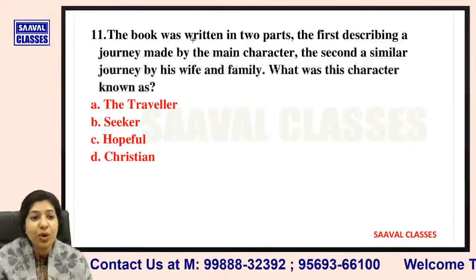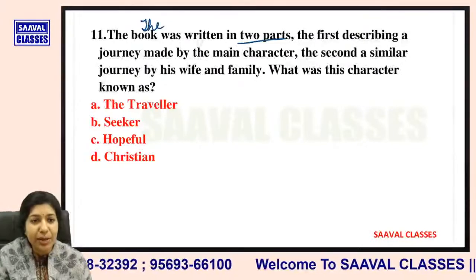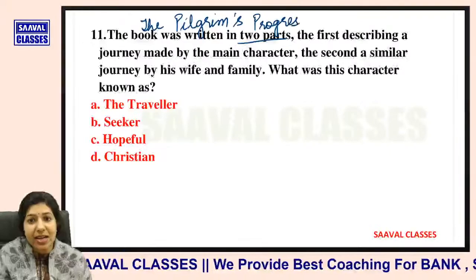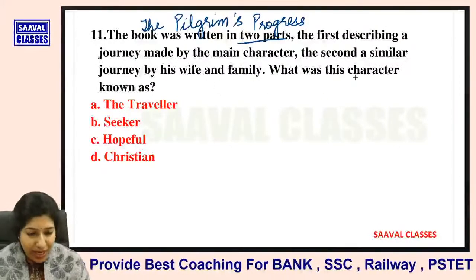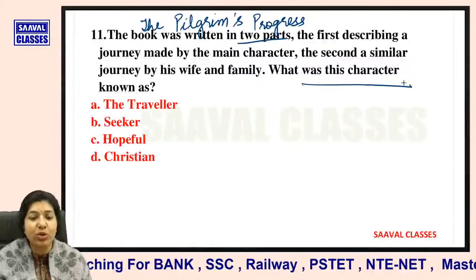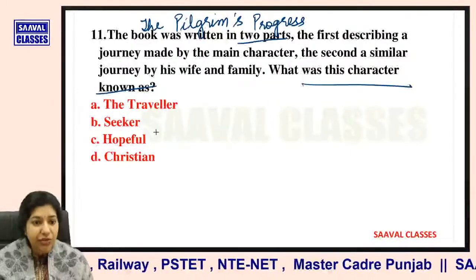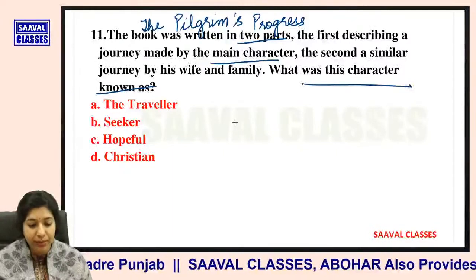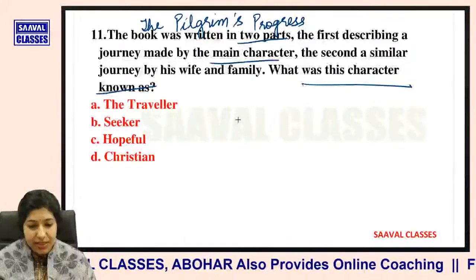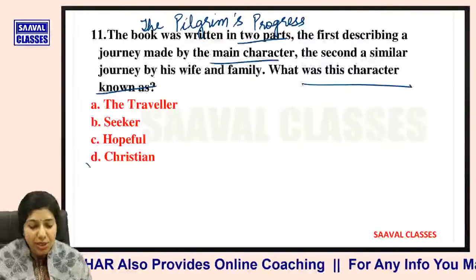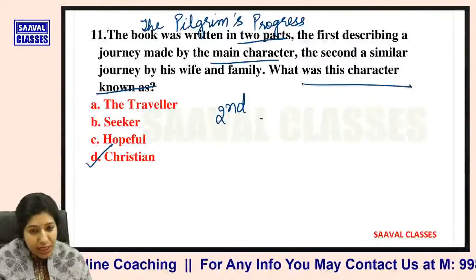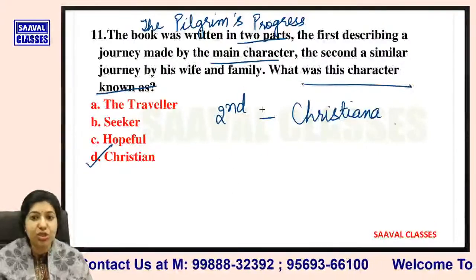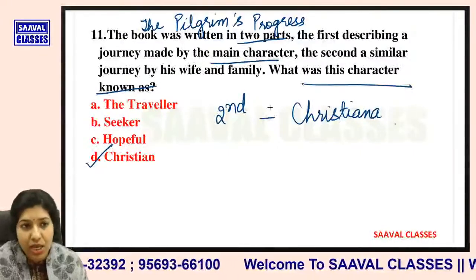Question number eleven: The Pilgrim's Progress was written in two parts. The first describes a journey made by the main character, and the second describes a similar journey by his wife and family. What was the main character known as — The Traveler, Seeker, Hopeful, or Christian? The main character was Christian. In part two, his wife undertakes the journey and her name is Christina.